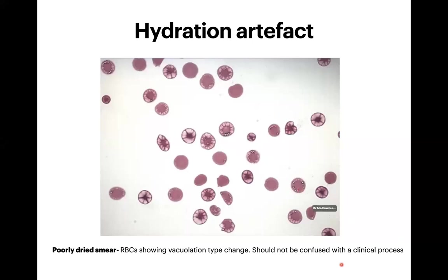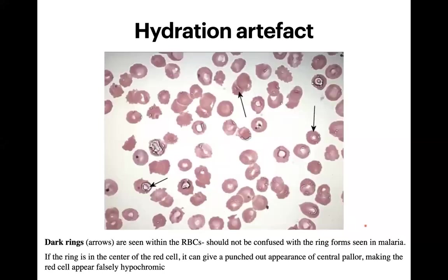Continuing with hydration artifact — the first set of images showed the effect of water content in methanol, and the second image showed the effect of poor drying of the smear. In the second image, there are eccentric vacuoles showing a black ring around them — at lower magnification these can be confused with malaria ring forms. When the vacuoles are central, they can be confused with artifactual hypochromia. You should be aware of this artifact and what changes it can cause, and not confuse it with a clinical process.